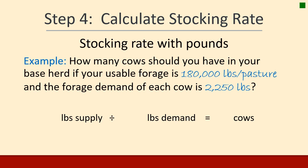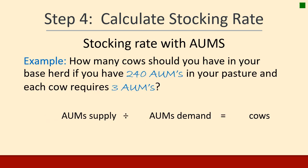Now step four — we have the supply and the demand, so what is the actual stocking rate? If your usable forage is 180,000 pounds and the forage demand per cow is 2,250 pounds, then 180,000 divided by 2,250 equals 80 cows. You could also calculate this in AUMs: 240 AUMs supply divided by 3 AUMs per cow equals 80 cows. No matter how you calculate it, you get 80 cows per three-month season on your ranch.